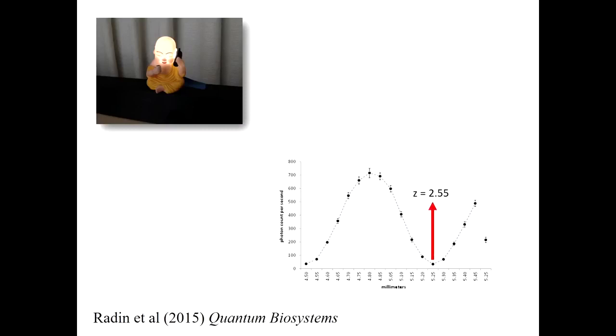So this is the result with the illuminated Buddha experiment. We predicted that that would go up, and it went up by two and a half sigma, so that was good. We published this last year, and it's got a prize for the best paper in that journal.